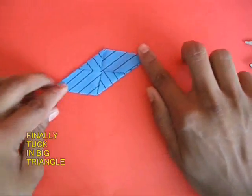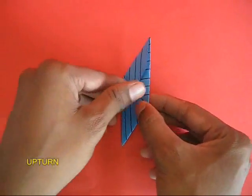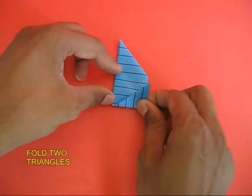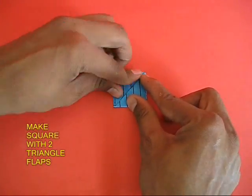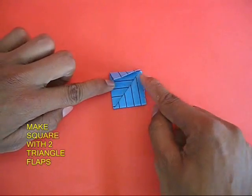This way you would get a shape of a parallelogram with four pockets. Upturn this parallelogram and then fold the two triangles as flaps with a square in the middle.